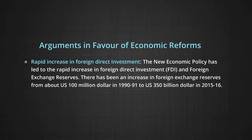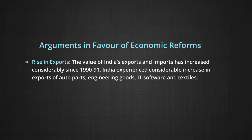Currently the growth rate of GDP is estimated to be more than 8 percent. Number two: rapid increase in foreign direct investment. The new economic policy led to a rapid increase in FDI and foreign exchange reserves — from about 100 million US dollars in 1991 to US dollar 350 billion in 2015-16. Number three: rise in exports. The value of India's exports and imports has increased considerably since 1990-91, with considerable increase in exports of auto parts, engineering goods, IT software, and textiles.